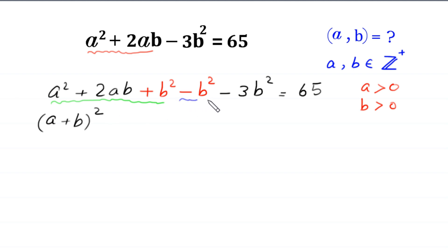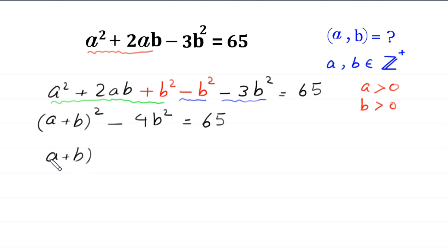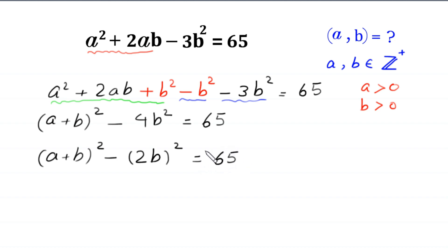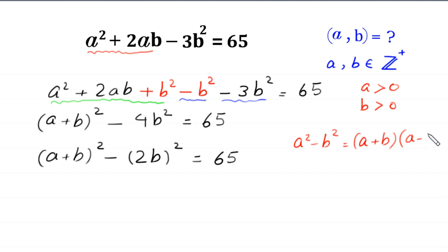This negative b squared minus 3b squared will become negative 4b squared, so we have (a plus b) whole squared minus 4b squared is equal to 65. Next, this can be written as (a plus b) whole squared minus (2b) whole squared is equal to 65. Now we have a difference of two squares. By using the algebraic identity, a squared minus b squared equals (a plus b)(a minus b).